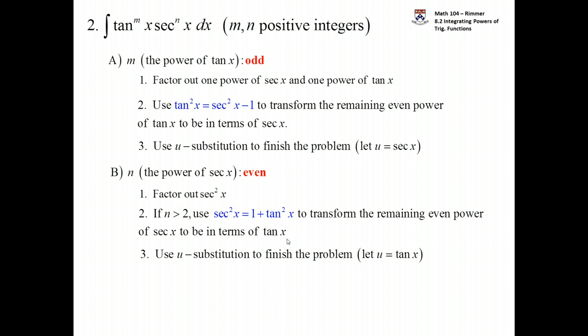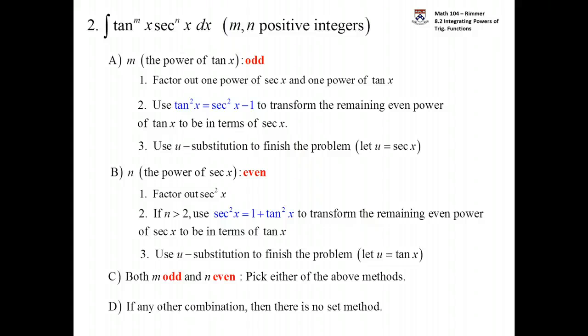So that's when the power of tangent is odd or when the power of secant is even. If it's both of these together, just pick one of the methods. It's not like you're going to do both. Pick one of the above methods and work it out. The problem comes when it's neither of these cases, which is very possible. And in that case, there's really no set method. There's nothing I can say that this substitution is going to work out. You have to try something else. So that's how you deal with powers of tangent and powers of secant.